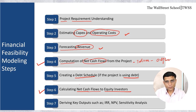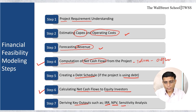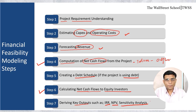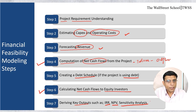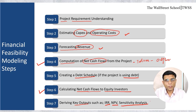In the final step, step 7, we calculate key outputs from this model — IRR to equity or to the entire project, net present value of the project, and sensitivity analysis. We determine what return this project will give to the investors. We can calculate this from the perspective of the firm, which includes both debt and equity, or from the perspective of equity investors only.